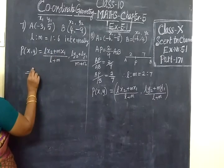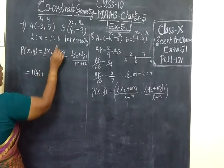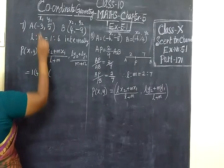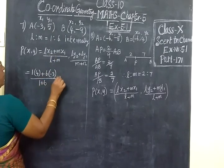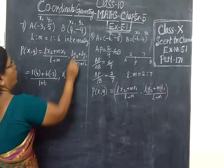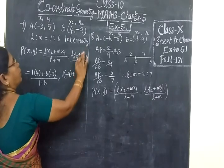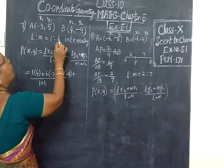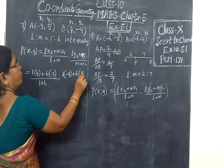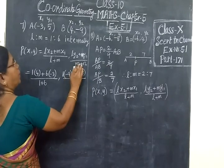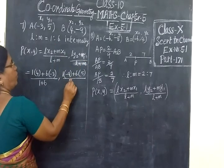So, L is 1. X2, 4 plus M, 6. X1 minus 3, while L plus M: 1 plus 6. Then L is 1, Y2 minus 9 plus M, 6 bracket Y1 is 5. Y divided by L plus M: 1 plus 6.